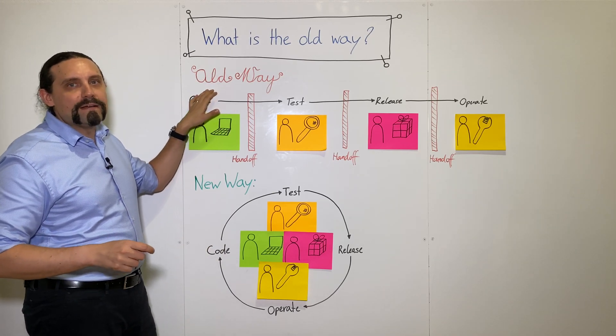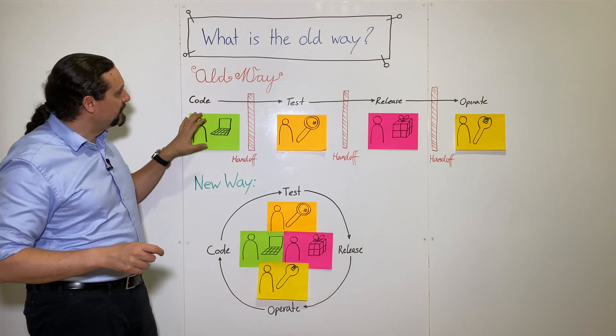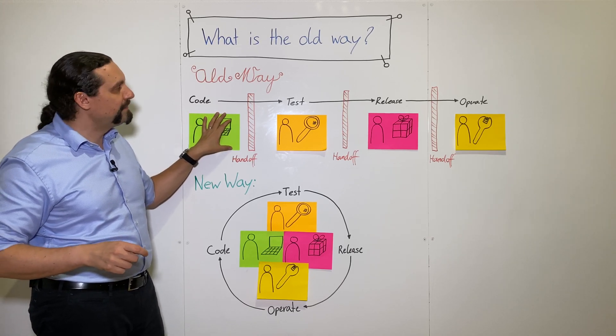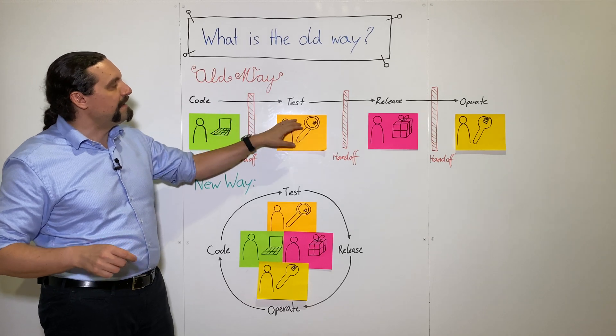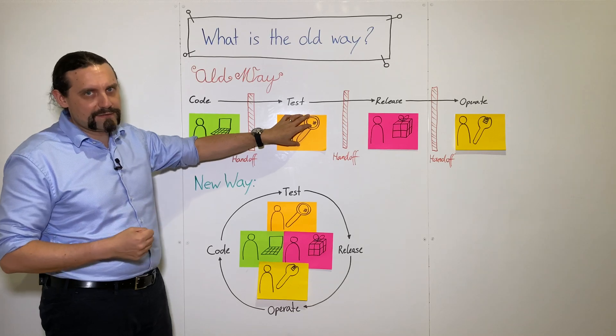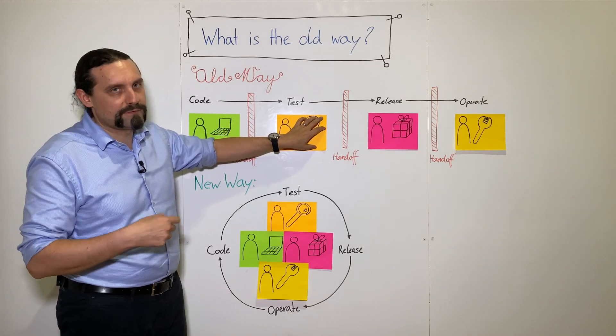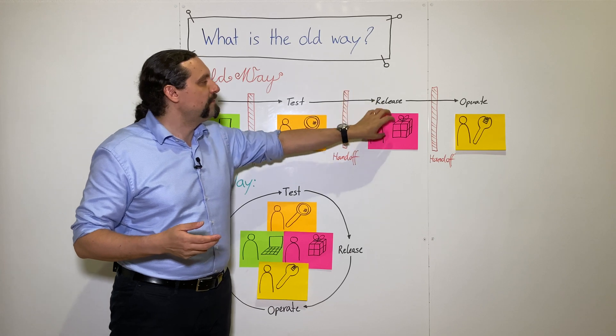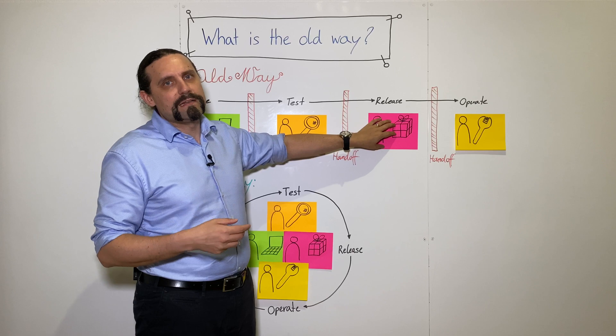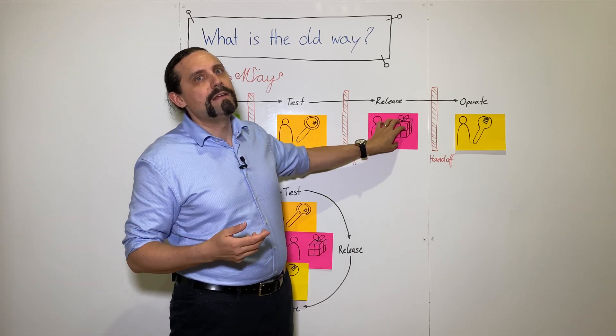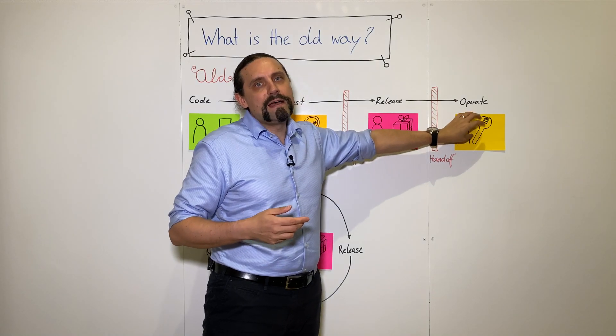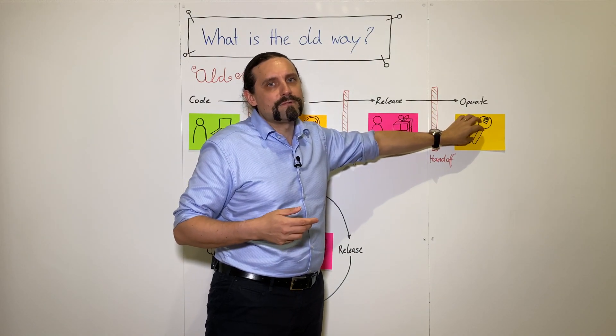Here we can see the old way of software development. In the old days, the developers were coding and building the software, and then they would hand off the software to the testers. The testers were testing the software, and when they finished testing and it was good, they would do a handoff to the release management. Release management would then do some paperwork and release the software via handoff to production, where the operation guys would take over.